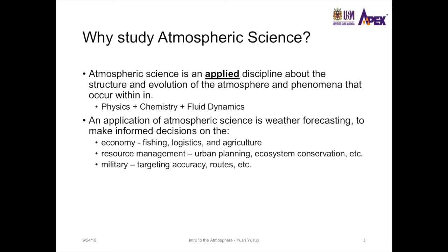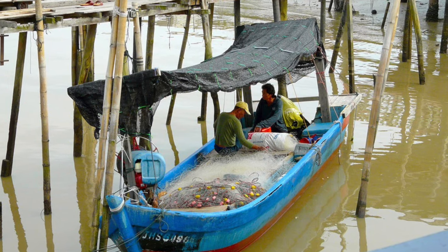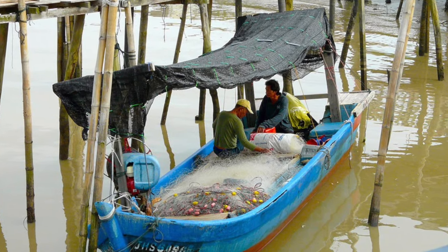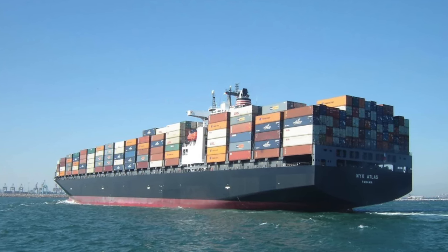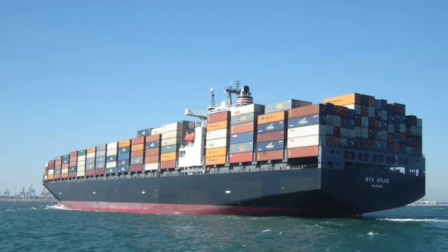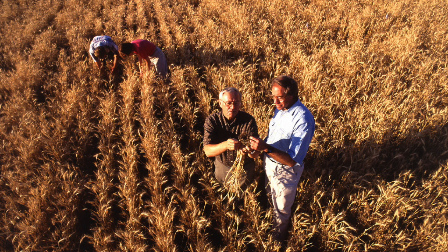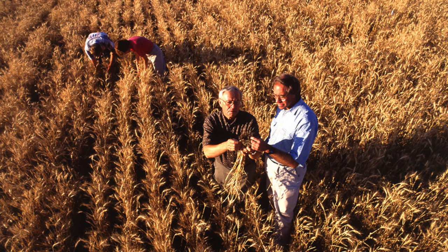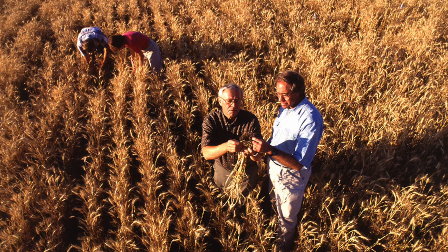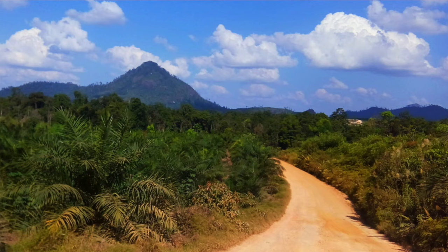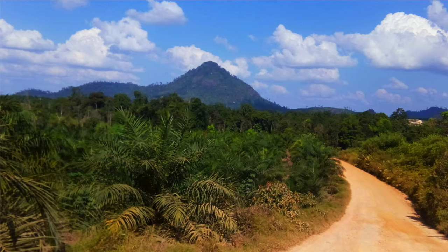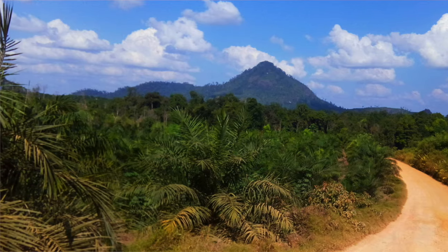In terms of economy, weather forecasting allows us to advise fishermen on whether they can go out to sea, or whether ships can use a certain route to carry cargo through a certain area. Even in agriculture, we can advise farmers on whether they should start planting or harvesting, since we can predict whether it will rain or not, which directly affects the productivity of crops.